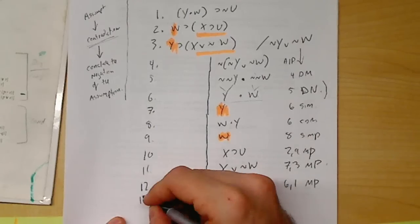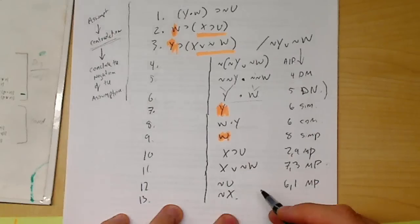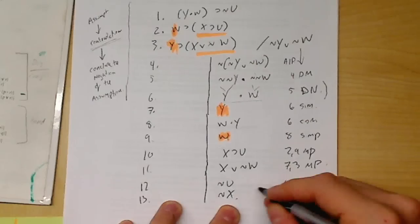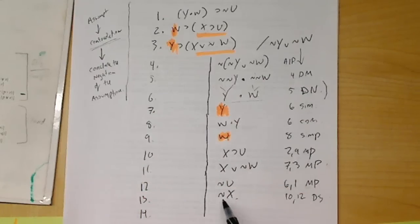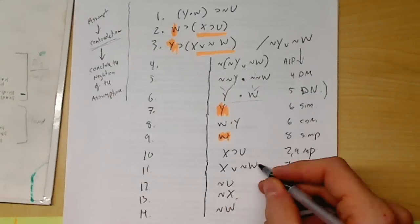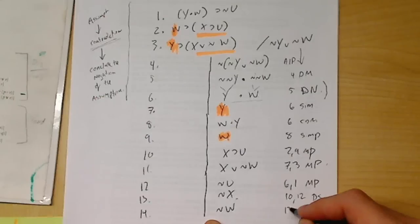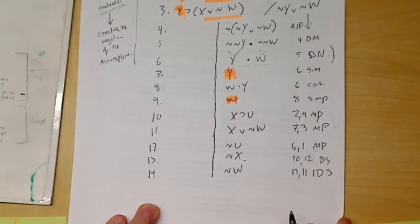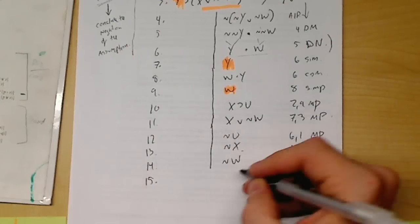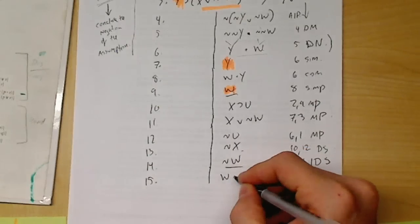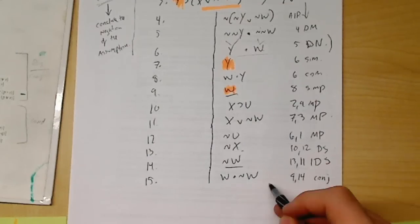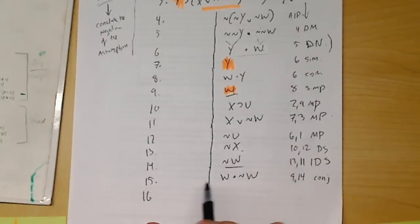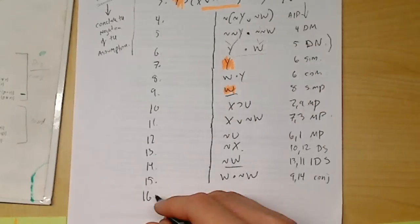Line 13 — I must not have X. That's line 10 and 12 disjunctive syllogism. And then line 14 — if I don't have X, I must have ¬W, from the other disjunctive syllogism with lines 13 and 11. So then line 15 is my conjunction because I now have both W and ¬W — that's W∧¬W, from lines nine and fourteen, conjunction. If I've conjoined W and ¬W, that's a contradiction, which means I can discharge.